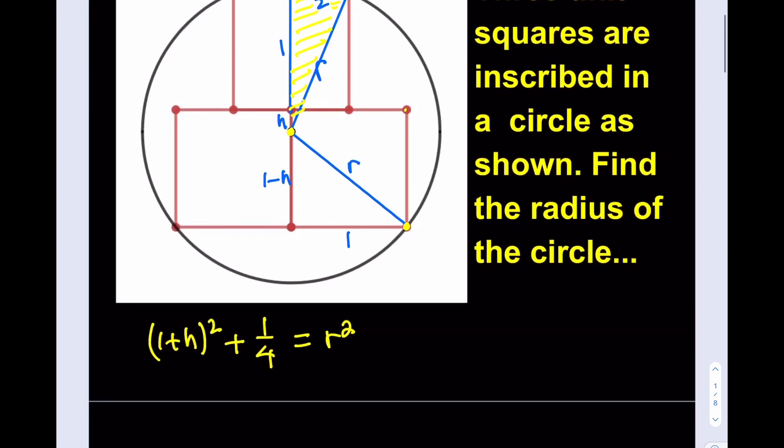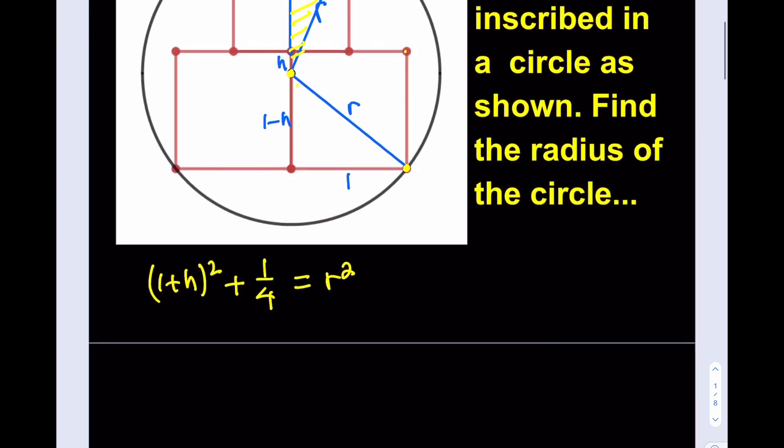That's my first relationship, and let's go ahead and write the second one. And the second one is going to be coming from here. And that's going to look like (1-h)² plus one, which we know the side length of one of the squares, right, is equal to r². Awesome.